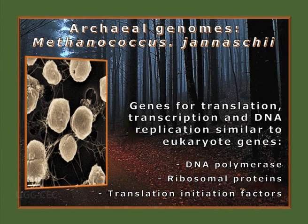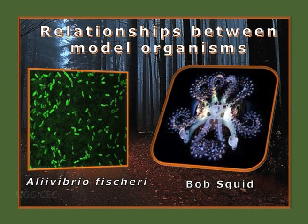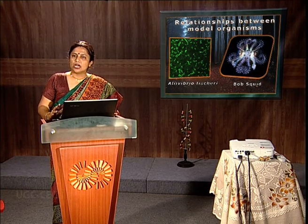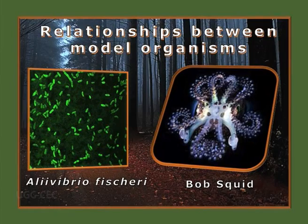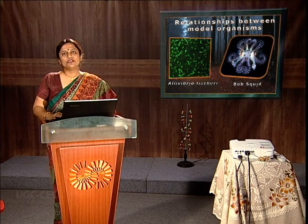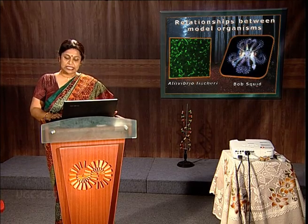Now we are talking about one of the most interesting model organisms of bacterial nature: Aliivibrio fischeri. The symbiotic relationship was first established with this bacterium and a Hawaiian bobtail squid. Two important aspects were established: quorum sensing — density-dependent expression of genes — was first established in Aliivibrio fischeri. Additionally, the concept of symbiotic relationship was demonstrated, where the bacteria resides inside the light organ of the bobtail squid, and in return the squid gets protection against predators.